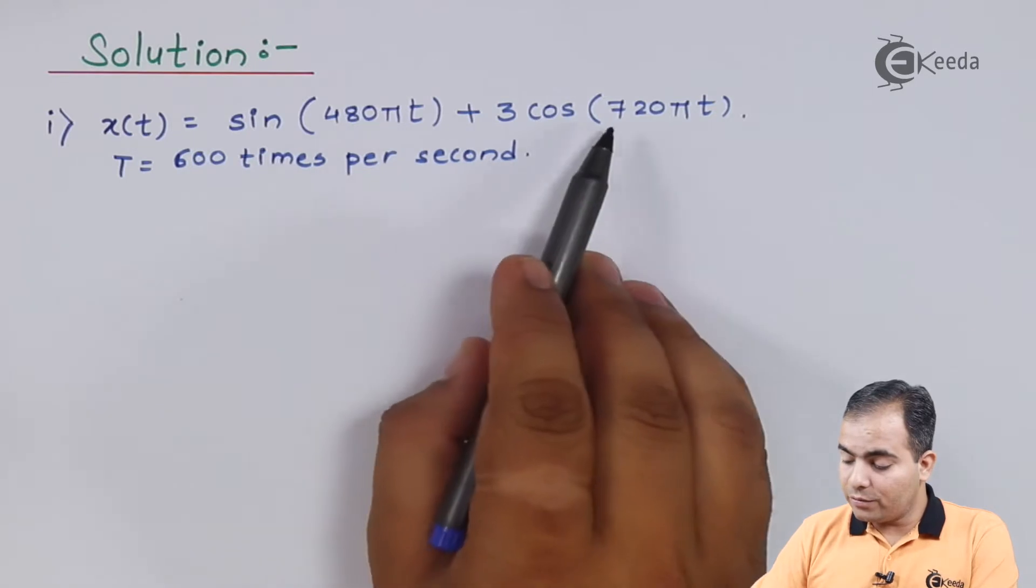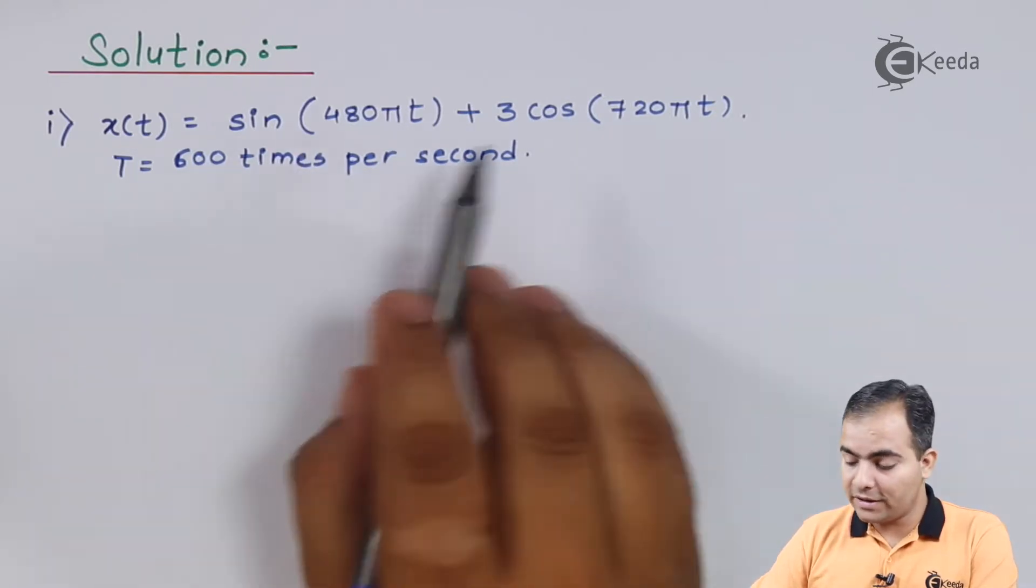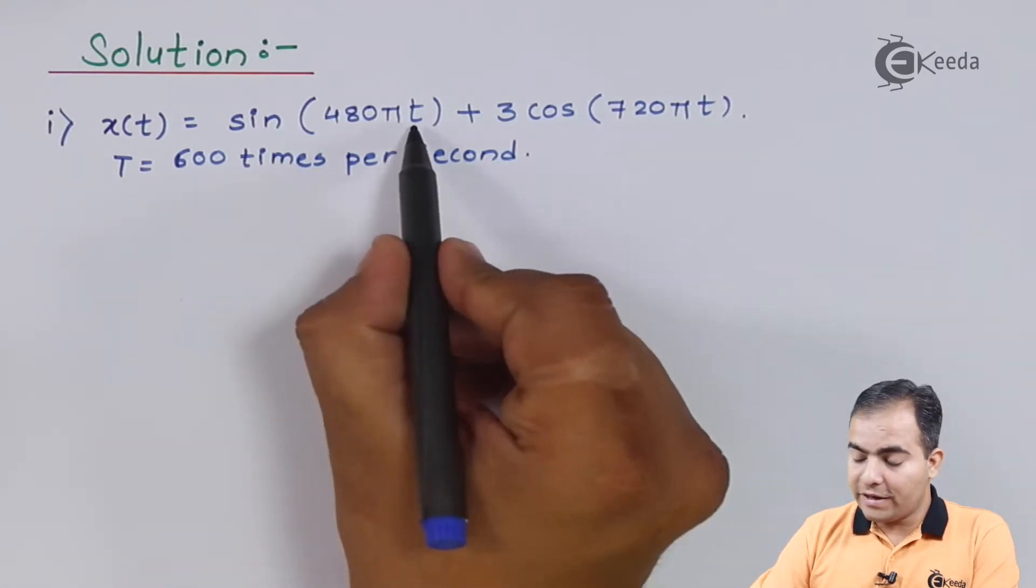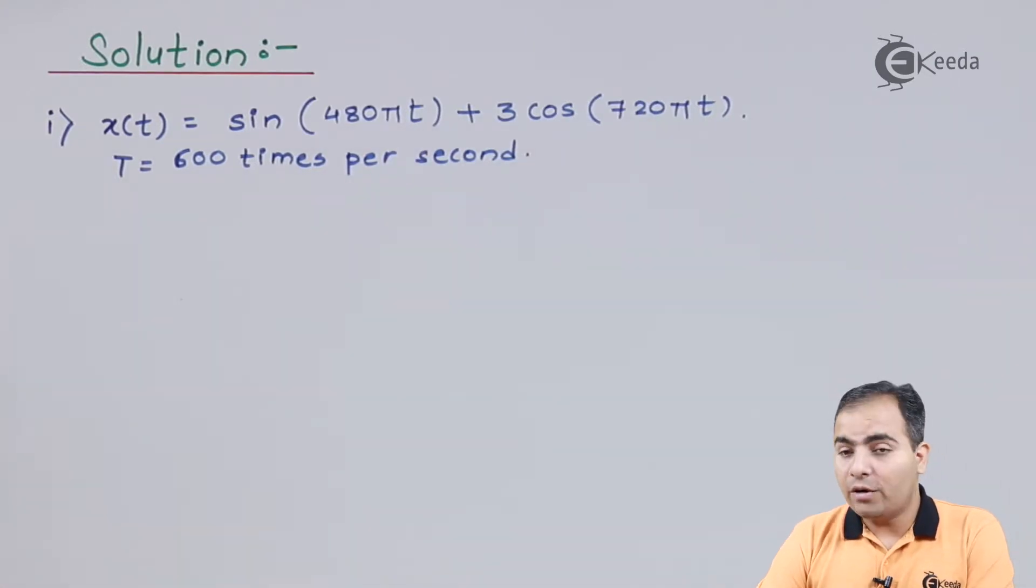Now we will calculate the first part, the Nyquist sampling rate. We have two different functions: first one is sin, second one is cos. I'm going to substitute my t value or replace this t value. How to replace it? Simply replace t by n/fs.